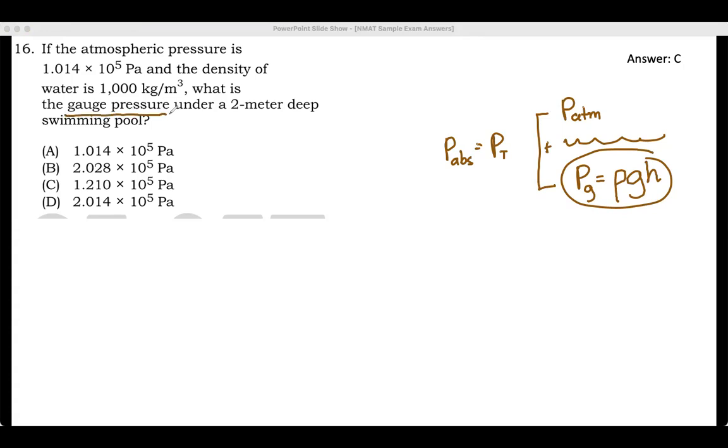What is the gauge pressure under a 2-meter deep swimming pool? Now, if you compute for that one, the gauge pressure is density times... This is our density. Let's just get the givens. The density, and this is the height.